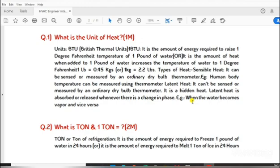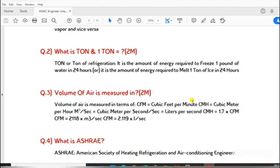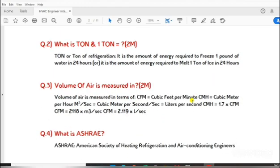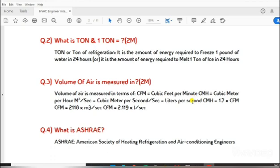Question 2: What is ton and 1 ton equals? Ton or ton of refrigeration is the amount of energy required to freeze 1 pound of water in 24 hours, or it is the amount of energy required to melt 1 ton of ice in 24 hours.